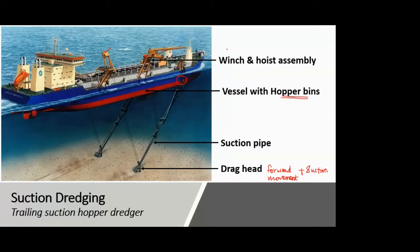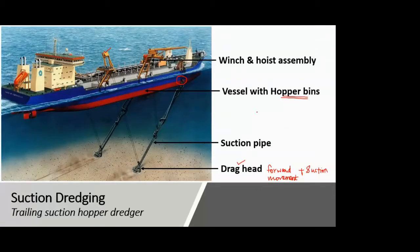So the main components of your trailing suction hopper dredger are: the drag head, which is in contact with the bed of the water body where suction takes place; the suction pipe, through which material is taken to the surface; the hopper bins, which hold the material; and the winch and hoist assembly, which lowers and raises the suction pipe and drag head assembly.